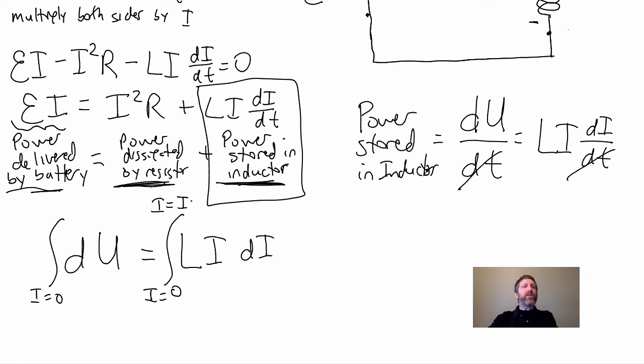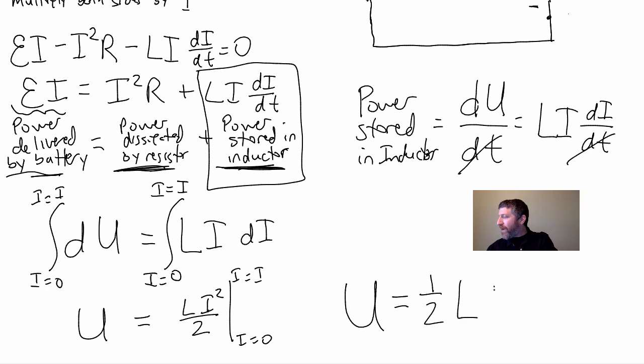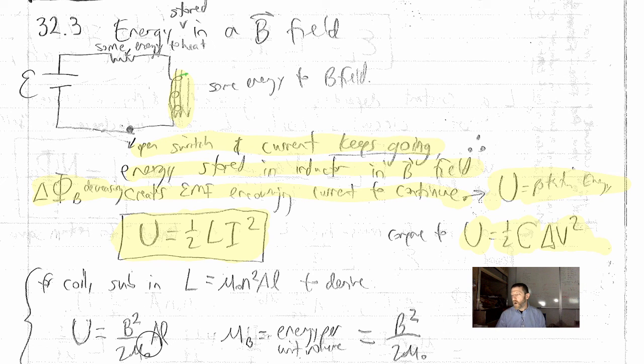And then, all we got to do then is, this will be the entire energy stored as we integrate dU, add up all the infinitesimal energy stored. And when we do that, we get the U stored in the inductor is equal to one-half LI squared. There it is right there. For the coil, we're going to derive what the energy per unit volume is. All you got to do is substitute our equation for our inductance of a coil. In order just to save time here, we're not going to derive it.